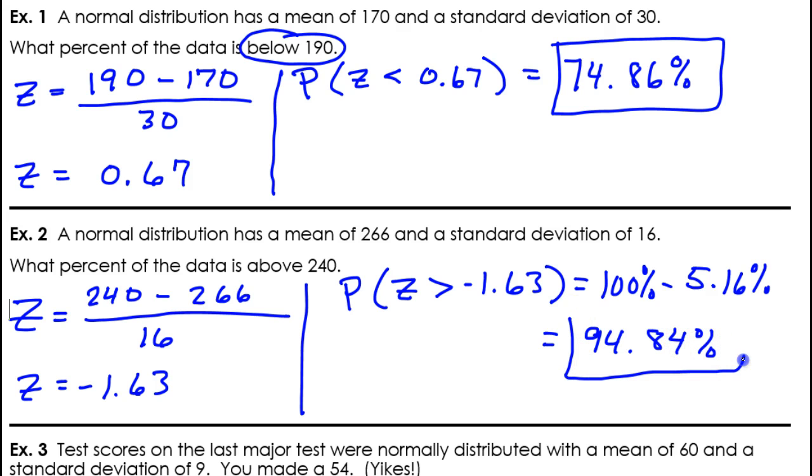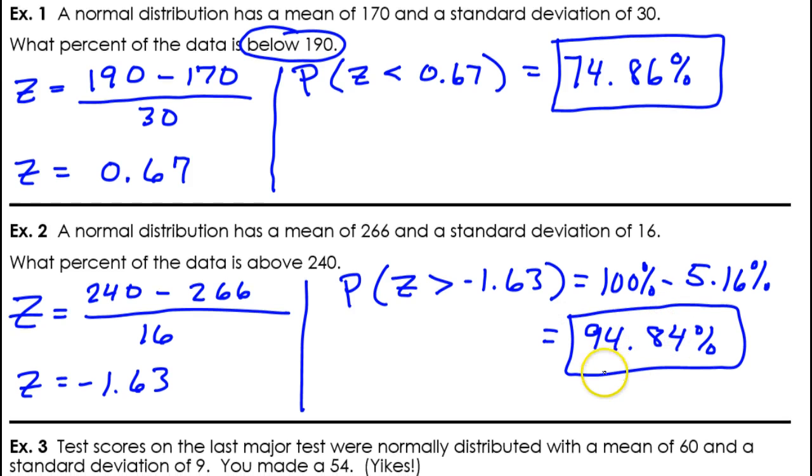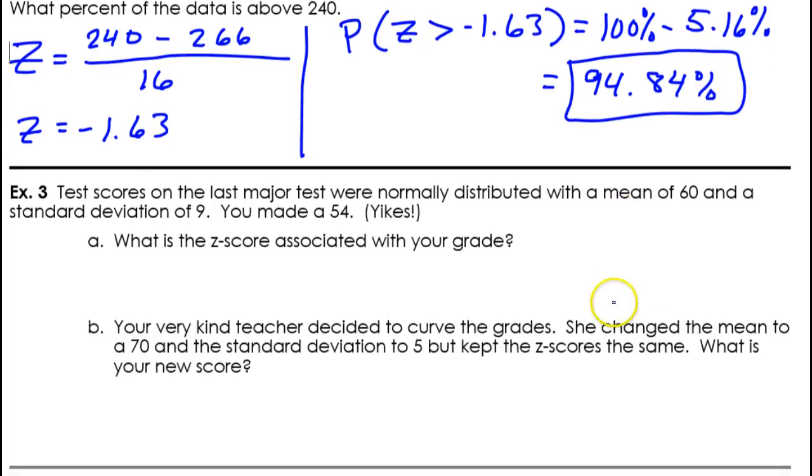94.84%. So, there you go. That's how you do that. Any questions, guys, guys, guys? Okay. Let's see if we can get one more problem done before we call it a day. Test scores on the last major test were normally distributed with a mean of 60. Ouch! The mean of 60 is pretty rough. And a standard deviation of 9. You made a 54. That hurts. Okay. You made a 54.